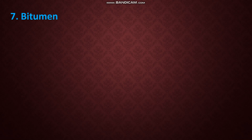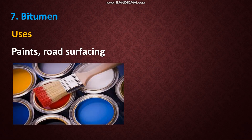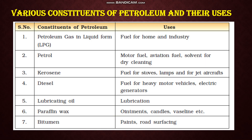Next constituent is bitumen. Previously, coal tar was used for surfacing roads; nowadays bitumen is used for road surfacing. It is also used to produce paints. Now we have learned the different constituents of petroleum and their uses.